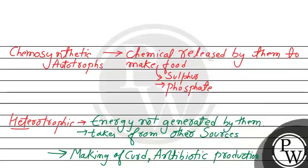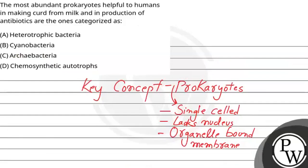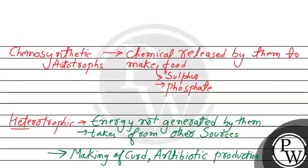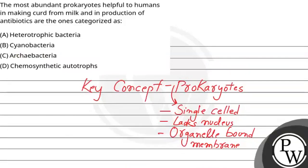Our question was the most abundant prokaryotes helpful to humans in making curd from milk and in production of antibiotics. Making of curd will be Lactobacillus and antibiotic we will use Penicillium notatum for antibiotic production which will be penicillin. The correct option is A, heterotrophic bacteria. I hope you understand it well. Best of luck.